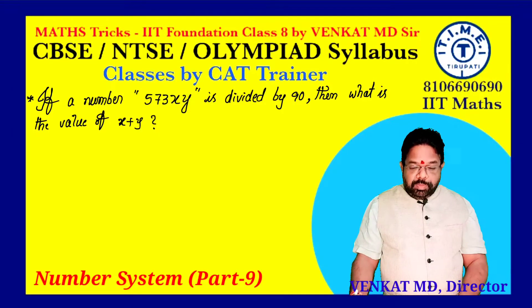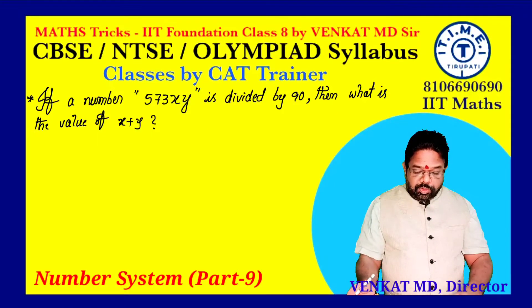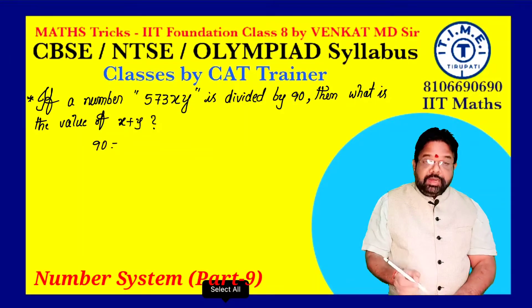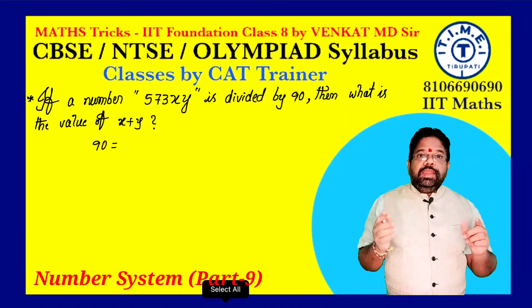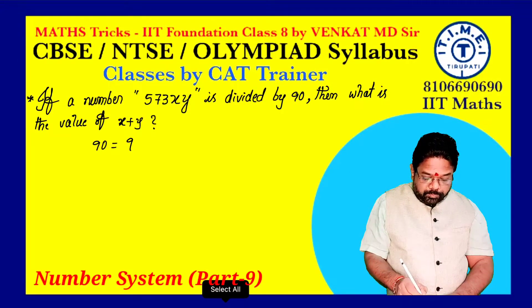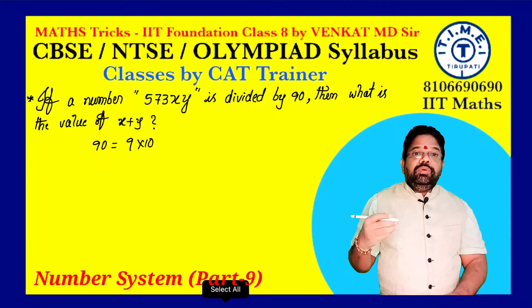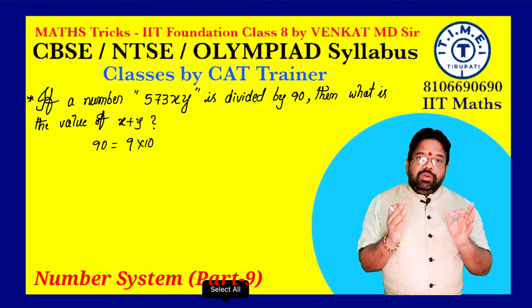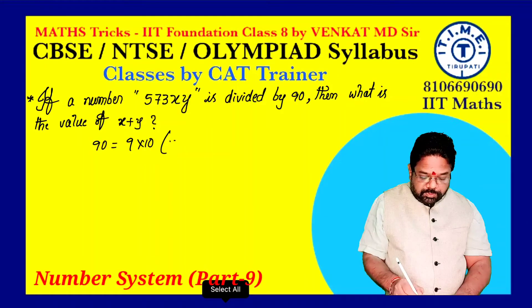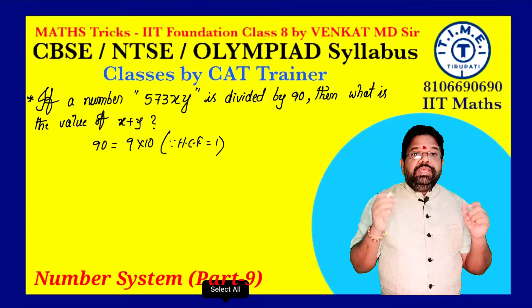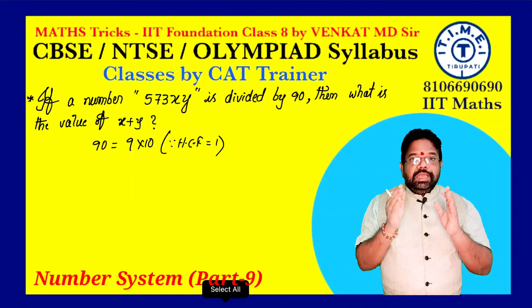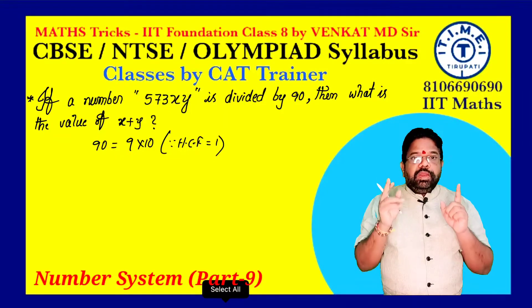When the given number is divisible by 90, our strategy is: the given number can be written as a product of co-primes. 90 can be written as 9 into 10. These two are co-primes to each other — 9 and 10 are co-primes. When we say co-primes, their HCF is 1. For 9 and 10, HCF is 1.